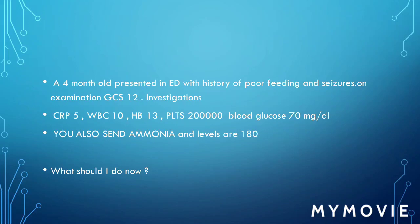Scenario one: a 4-month-old presented in ED with a history of poor feeding and seizures. On examination, GCS is 12. Investigations are normal, CRP is 5, but ammonia level is 180. So the question is, what should I do now?